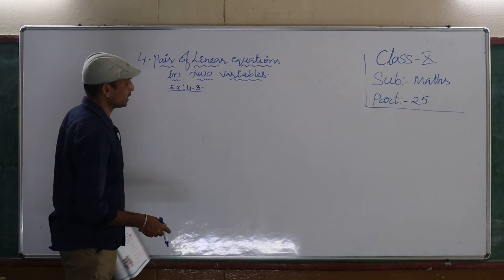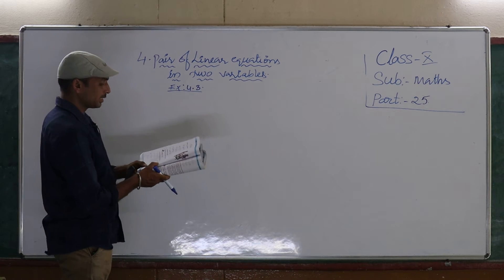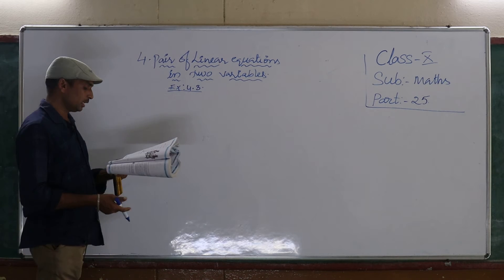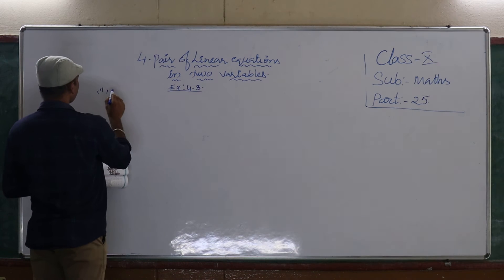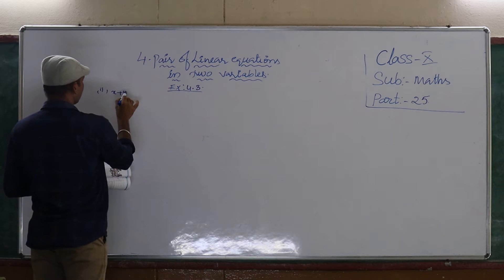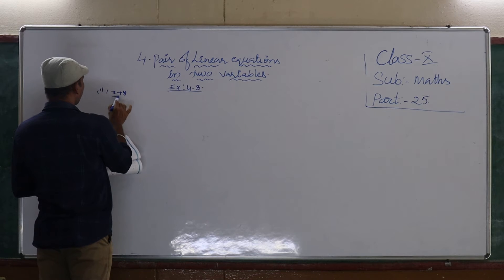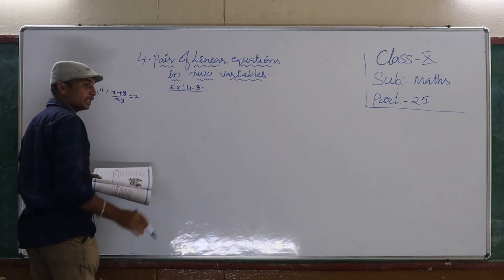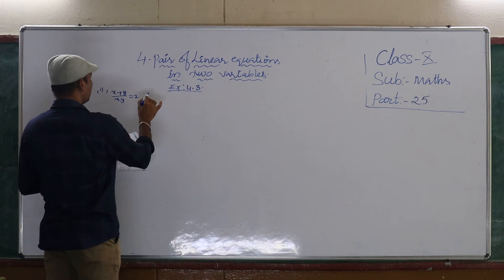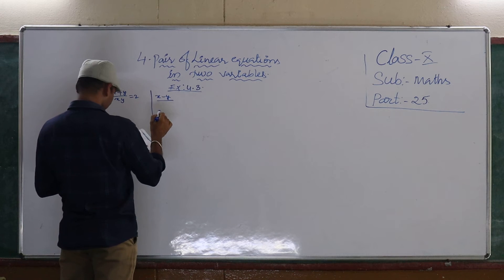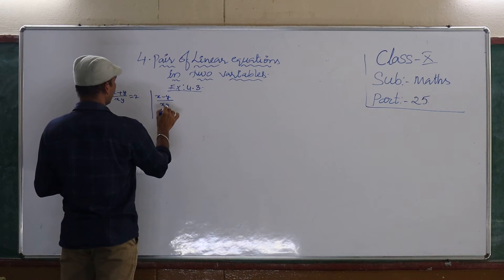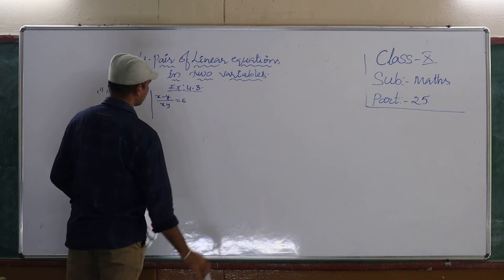Okay, children. So, next, the second problem. What is given? x plus y by xy. This type of question is important. And x minus y by xy is equal to 6.